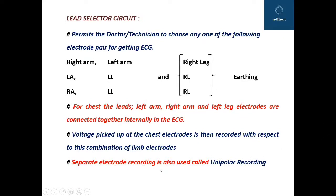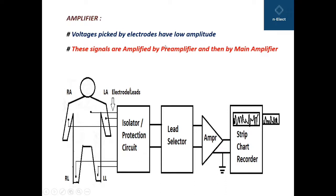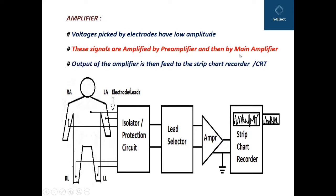Separate electrode recording can also be done, and this is known as unipolar recording. The next block is the biological amplifier. We call it a biological amplifier because the biological parameters have very low magnitude and need to be amplified. Voltages picked up by the electrodes have low amplitude and are amplified first by a pre-amplifier and then by the main amplifier. The output of the amplifier is then fed to the strip chart recorder or CRT — the cathode ray tube — which is the oscilloscope display.